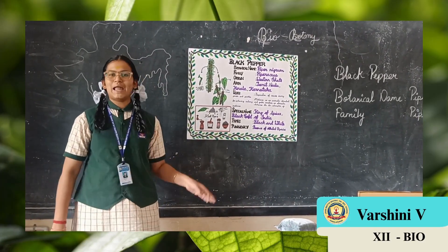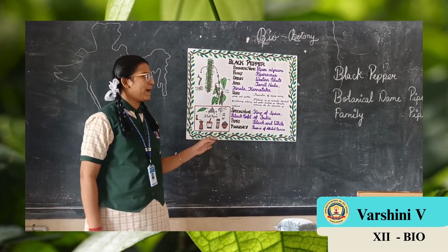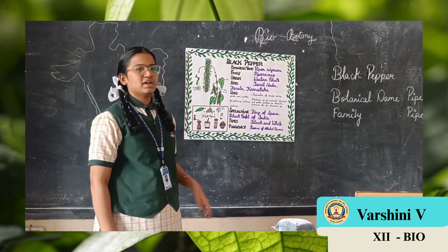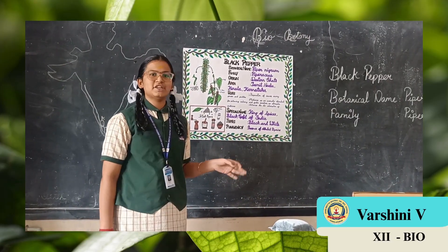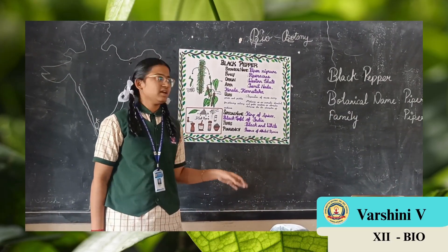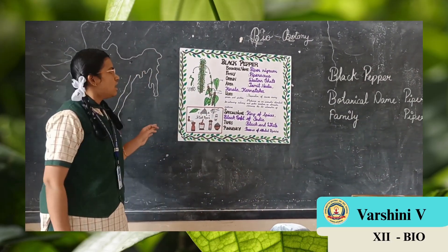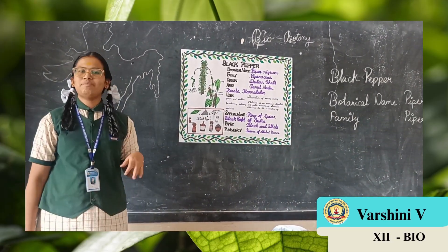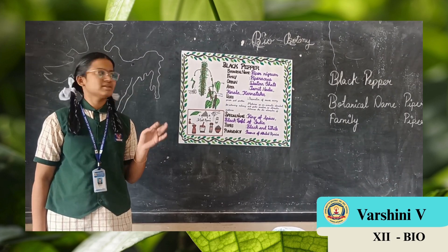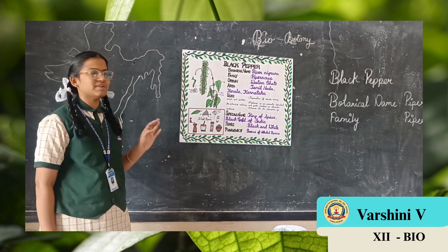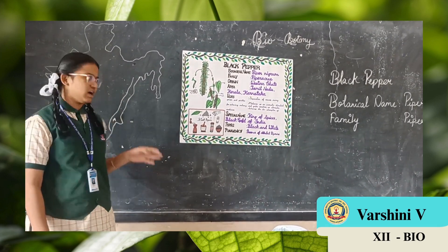The botanical name of black pepper is Piper Nigrum. The family of black pepper is Piperaceae. The origin of black pepper was cultivated in Western Ghats of India.